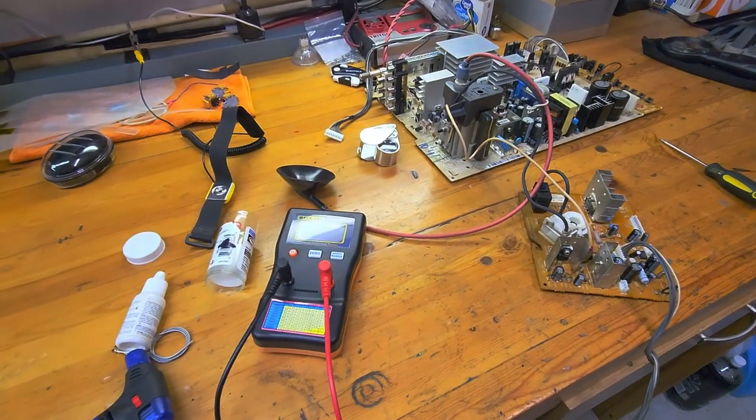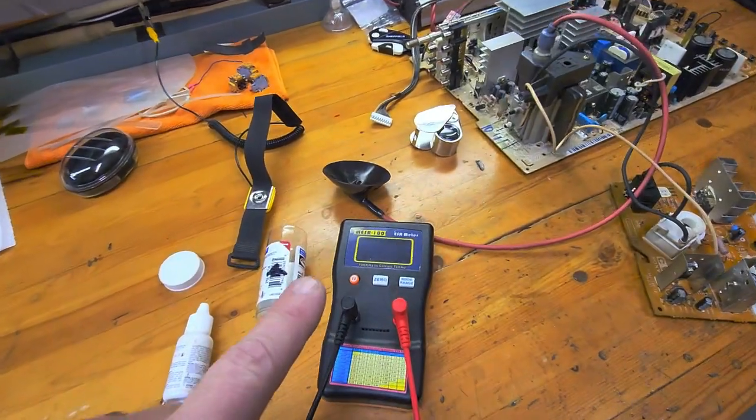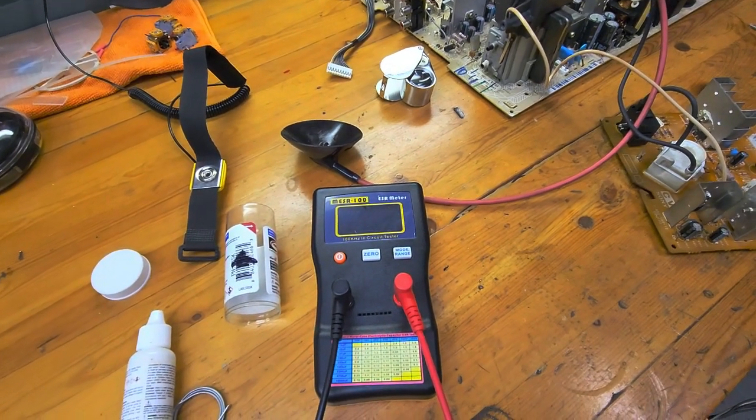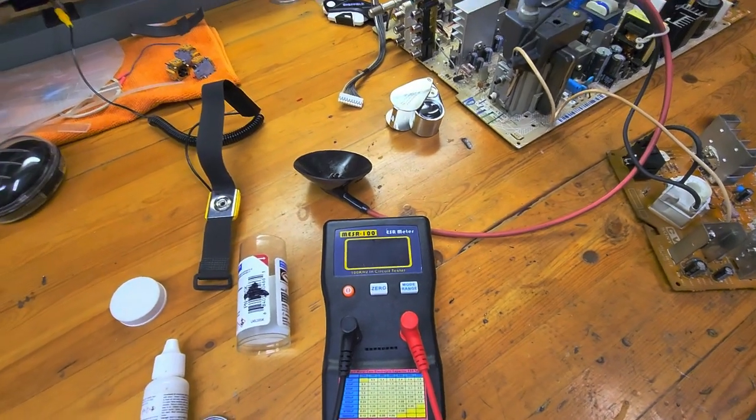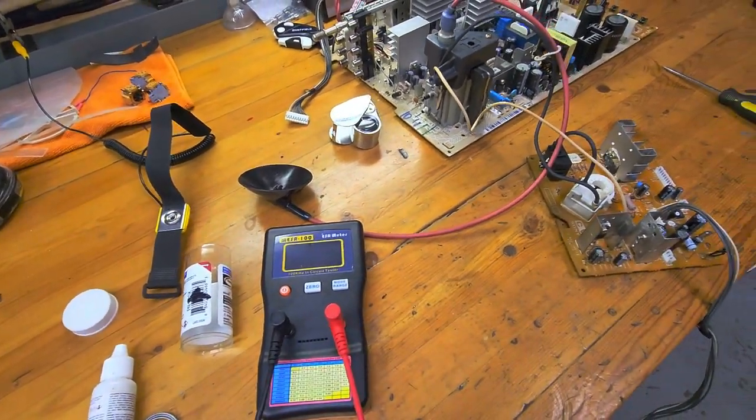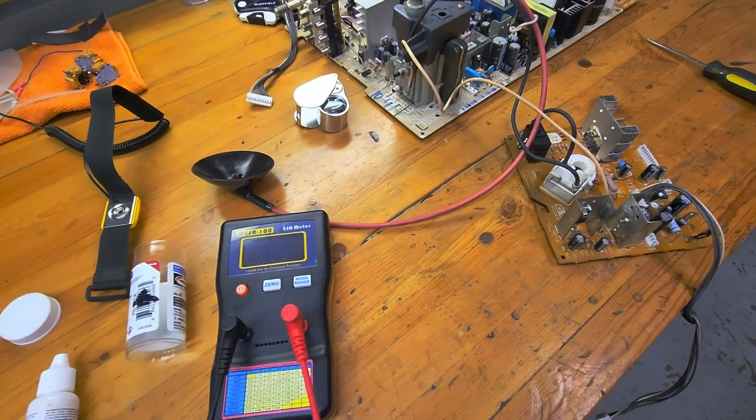Hey folks, quick tip on this MESR100 ESR equivalent series resistance meter for testing capacitors in circuit without having to lift a lead or remove it from the circuit for electrolytic capacitors.